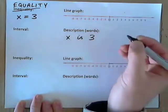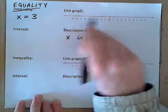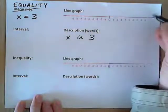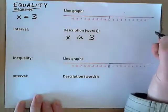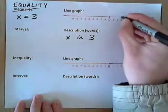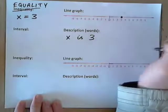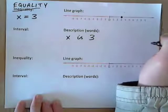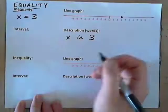That makes sense? How would we graph that on a line graph? Well, they just put a circle on 3. That's it. So, x is 3, and that's an equality.